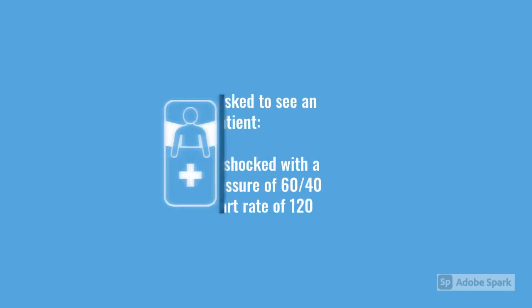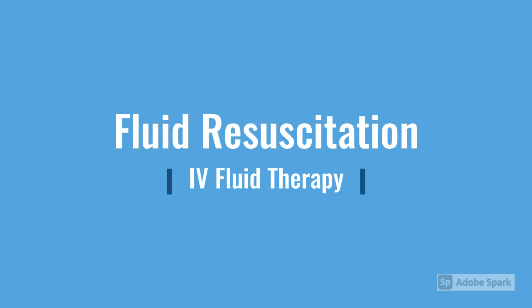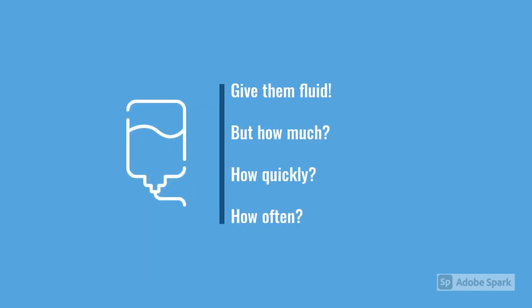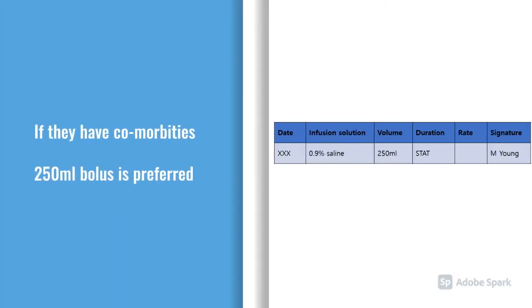For fluid resuscitation — say you've got a patient in shock, blood pressure less than 60, heart rate around 120 — if they're a normal healthy weight adult with no major comorbidities, give a 500 millilitre bolus of crystalloid, preferably 0.9% normal saline. As F1s and F2s, saline is your preferred resuscitation fluid because keeping it simple keeps it safe. If you've got someone with comorbidities, very frail or tiny, then a 250 millilitre bolus is appropriate.